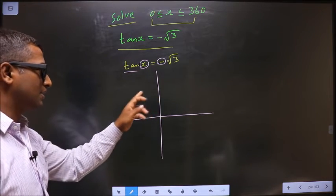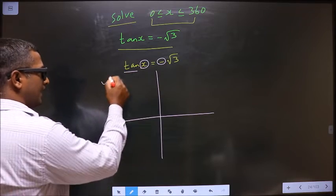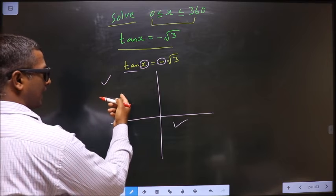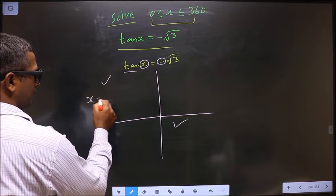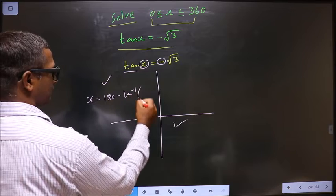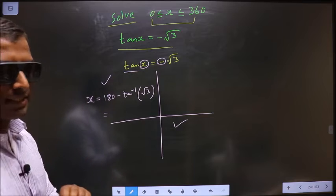It is like all silver tea cups. So tan is negative in the second and in the fourth. To get an angle in the second, we should do 180 minus tan inverse root 3. Remember this.